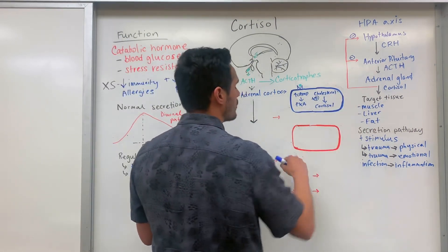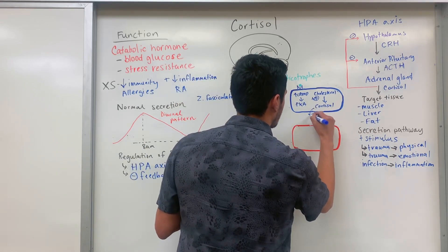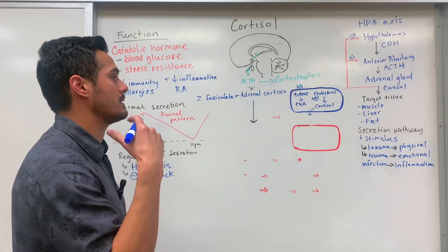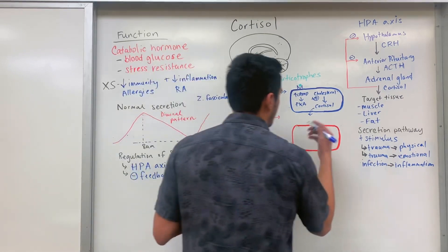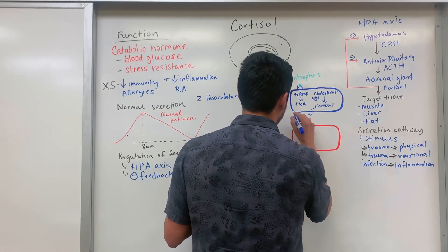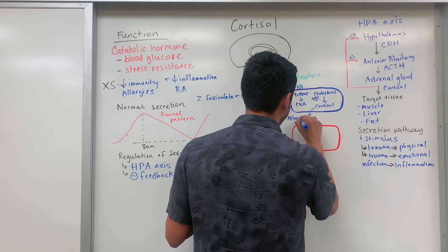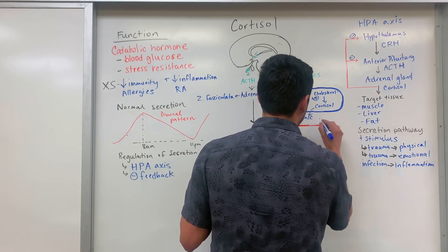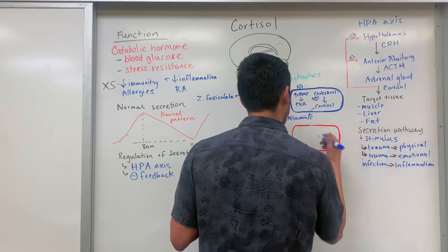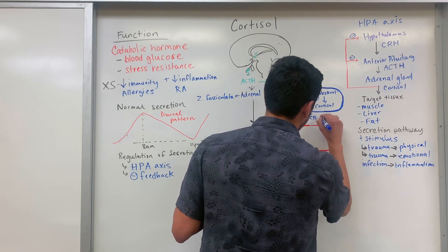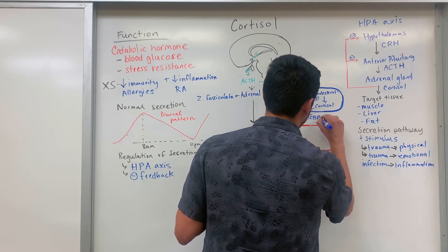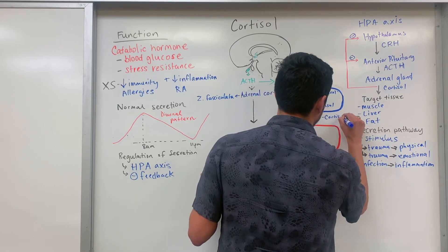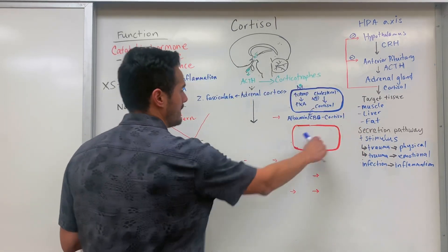From there, cortisol will get into the blood. Once it gets into the blood it needs a carrier, because cortisol is not water soluble. Some of the different carriers include albumin, or it can also bind to what's known as corticosteroid-binding globulin. Cortisol can bind to either of these carriers to travel through the blood to its target tissue.